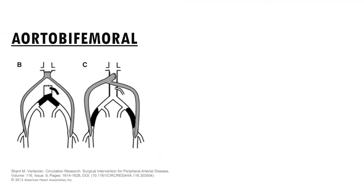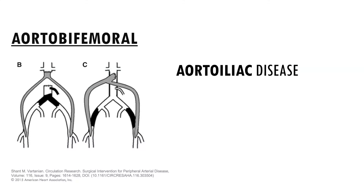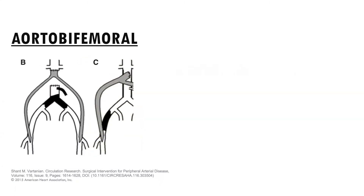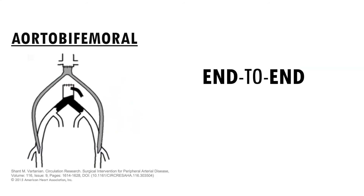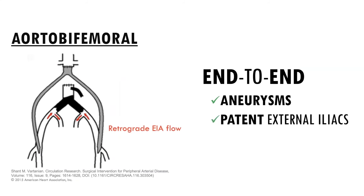Aortobifemoral bypass is the gold standard for aorto-iliac disease. Aortofemoral bypass is also done; however, bilateral bypass does not complicate the procedure or add to the physiological stress of the operation, and although one side may be more severely affected, disease progression does occur over time. The proximal anastomosis can be end-to-end or end-to-side. An end-to-end anastomosis allows straight, in-line, theoretically less turbulent flow and is preferred if the patient has a concurrent abdominal aneurysm to exclude it from circulation. Since the distal aorta is oversewn, leaving a stump, pelvic perfusion is dependent on retrograde flow from the external iliacs and from proximal lumbar and mesenteric collaterals.